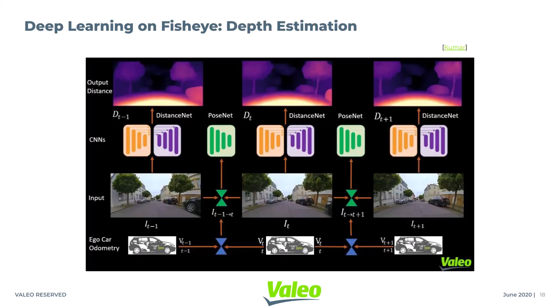Here I am going to present our self-supervised monocular depth estimation work. Instead of using two images, we use three images for robustness during the training phase. Images at time t-1 and t are passed through a distance prediction network individually. Pairs of images are passed through a pose estimation network to estimate the transformation between consecutive frames. This transformation matrix is not at absolute scale, so we use vehicle odometry to get the absolute scale.